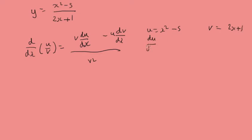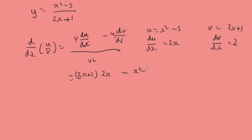We find du/dx equals 2x and dv/dx equals 2. Slotting things in: we've got our denominator first, which is 2x plus 1, multiplied by the derivative of the numerator, which is 2x, minus our numerator x squared minus 5, multiplied by the derivative of the denominator which is 2. All over 2x plus 1 squared.